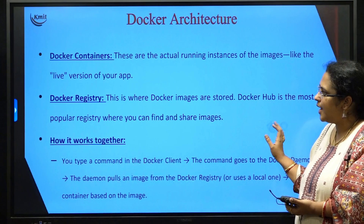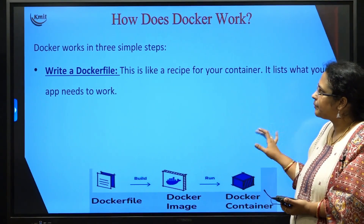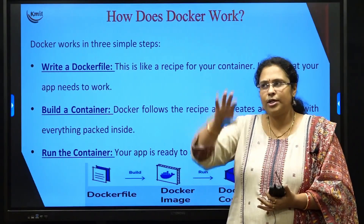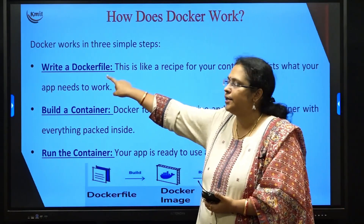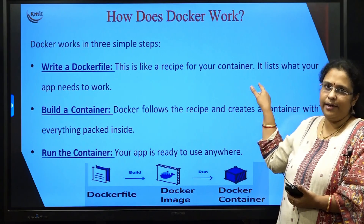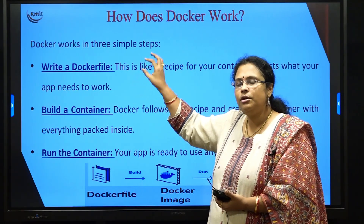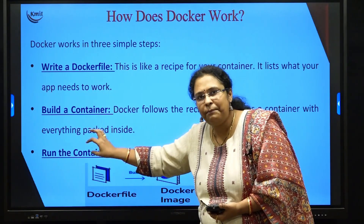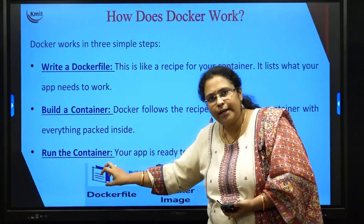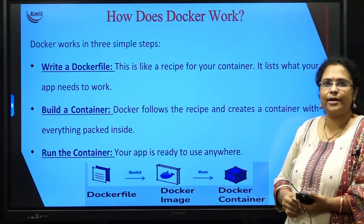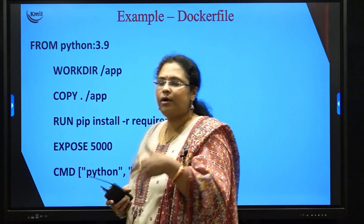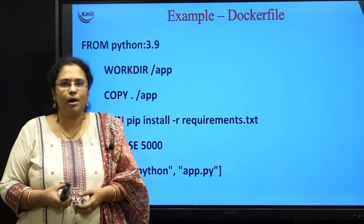Now let us understand how Docker actually works. Say I have created an application and want to convert it into an image so somebody else can use it. The first thing is to write a Dockerfile — a configuration file, the recipe to your container. Along with your application, you build the Dockerfile and application together into an image, then store that image in Docker Hub. After that, you can pull the image and run it as a container. Let me show you an example of a Dockerfile.